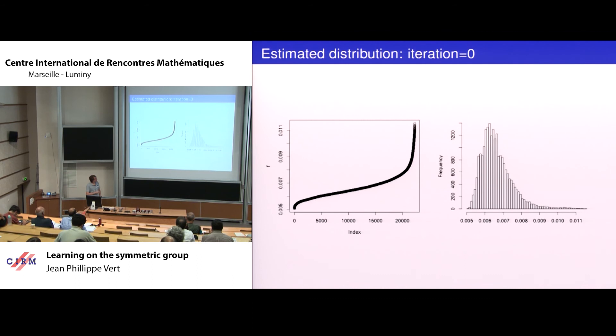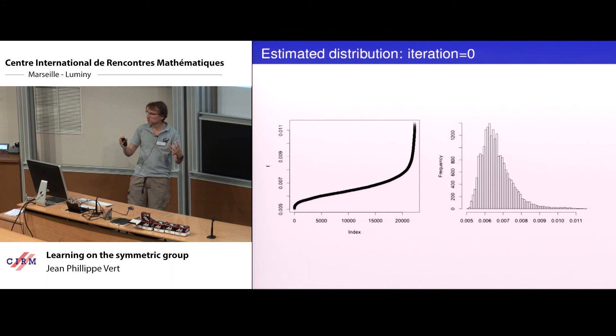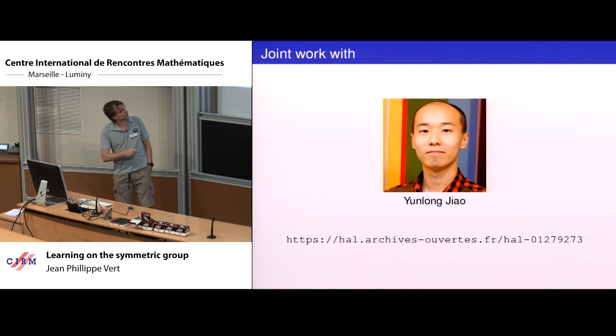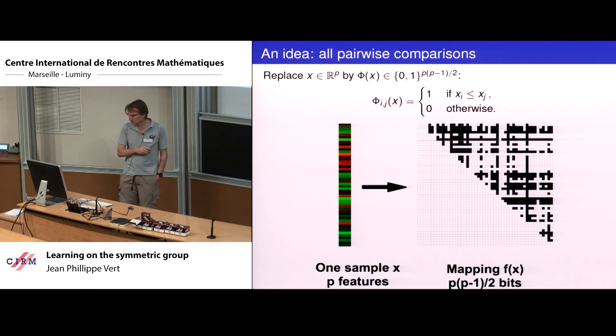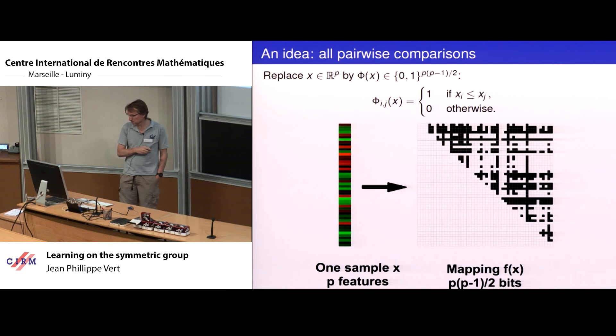We also worked on gene expression data. We don't have spectacular results, but the performance is largely state of the art or slightly better. The notion is that even for gene expression data, you may just forget about the values and keep only the ordering, and you don't lose predictive signal—which is what we observed. I'll conclude by thanking my team and the various funding agencies. Thank you.